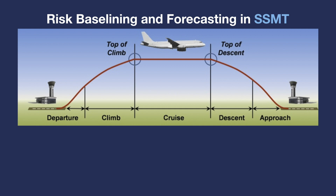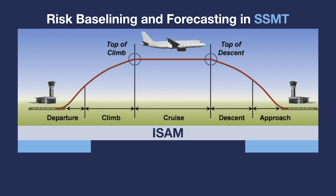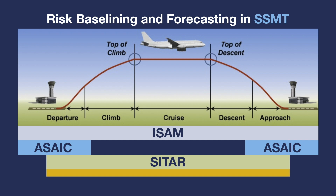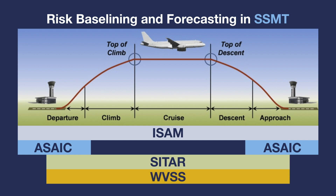Four tools make up SSMT. They work together to identify and analyze candidate safety events, or things that introduce risk in the airspace. The analysis from these tools enables engineers, managers, and policy makers to make risk-informed decisions about the priority, timing, safety benefits, and impacts of operational changes to the National Airspace System, or NAS.